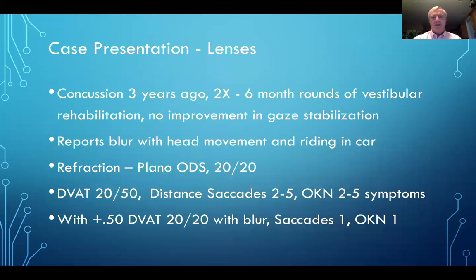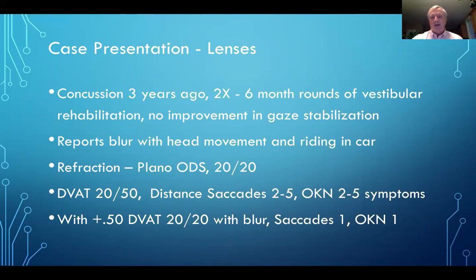Case presentation: a concussion patient three years post-injury, having undergone vestibular rehabilitation twice with no improvement in gaze stabilization therapy. Chief complaint is blur with head movement and riding in a car, plus associated headaches. Refracted plano, 20/20 in each eye. Dynamic visual acuity test: shaking the head produces 20/50 visual acuity — a loss of more than two lines, indicative of visual-vestibular dysfunction in the VOR gain. Distance saccades went from two to five. OKN drum to the sides also went from two to five. Trial-framed plus 50 over the top: distance visual acuity improved to 20/20 with slight residual blur, saccades improved, and OKN motion improved from baseline.